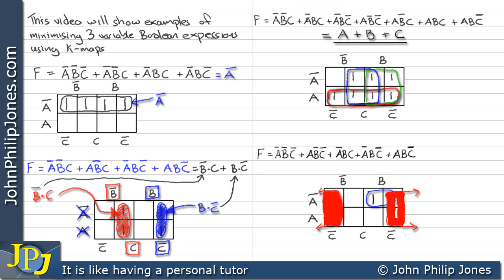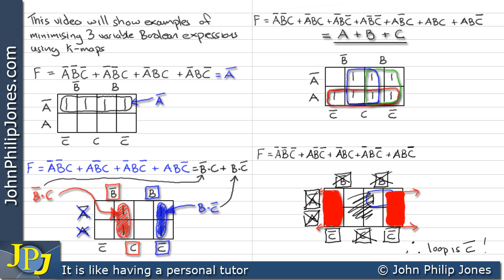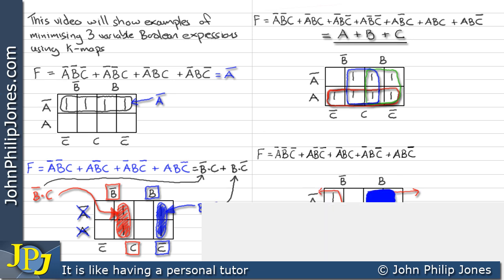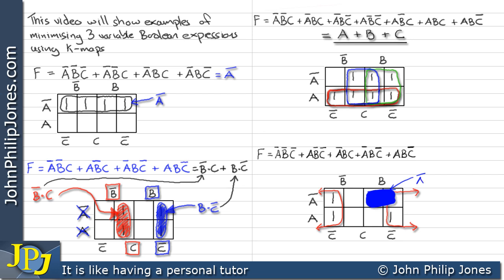We'll now shade the red loop in so we can clearly see it overlaps the As, and it also overlaps the Bs. All of this area is C and none of the loop is in C, so we get rid of that. Both parts of the loop are in not C — therefore the loop is regarded as being not C. We'll now shade in the blue loop, and we should be able to see that this is represented by not A and B. Consequently this Boolean expression — this sum of minterms — becomes not C OR (not A and B).